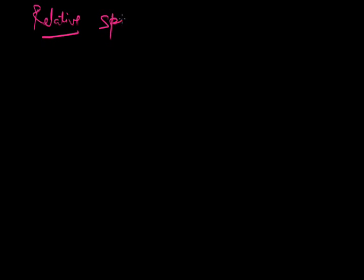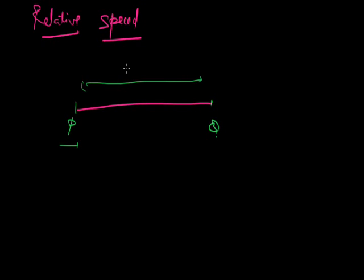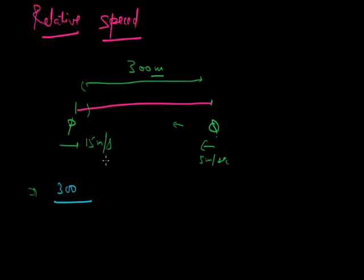Next important concept is relative motion or relative speed. If person P and person Q have a distance of 300 between them, P has a speed of 15 metres per second and Q has a speed of 5 metres per second. If P is moving towards Q and Q is moving towards P, the time in which they will meet is 300 upon speed of P plus speed of Q, which is 300 upon 20, that is 15 seconds.